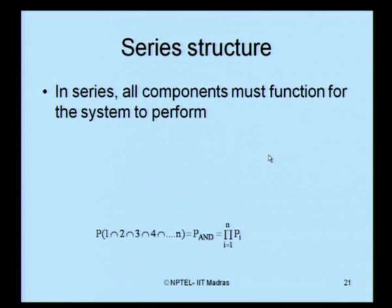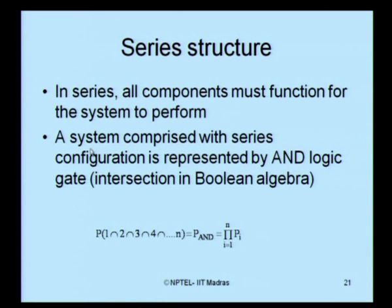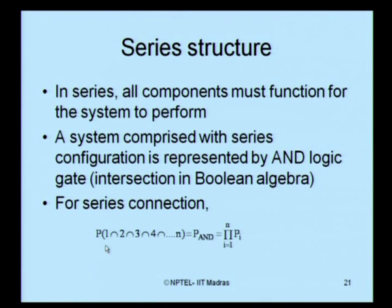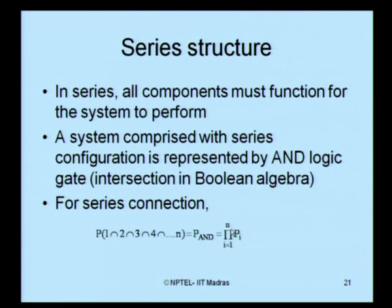In series structure, all components must function for the system to perform. A system with series configuration is represented by an AND logic gate, which is the intersection symbol in Boolean algebra. For a series connection with components 1, 2, 3, 4 ... n, the probability can be expressed as the product of the individual probabilities P_i, for i varying from 1 to n.